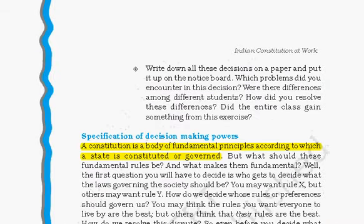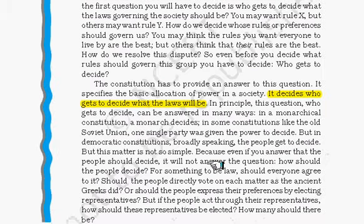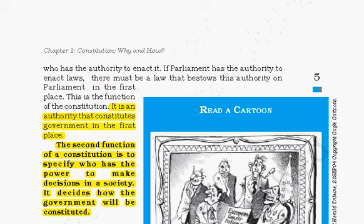The second function is that it provides specification of decision-making powers. The constitution is a body of fundamental principles according to which the state is constituted and governed. For example, India follows a parliamentary system of government. So the constitution specifies who has the power to make decisions in society and also decides how the government will be constituted.